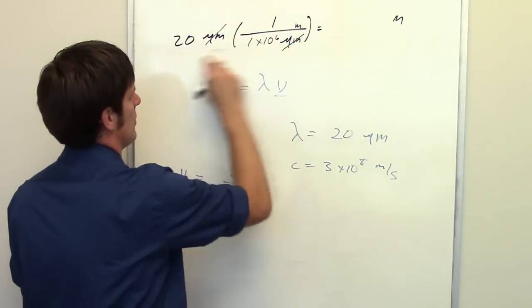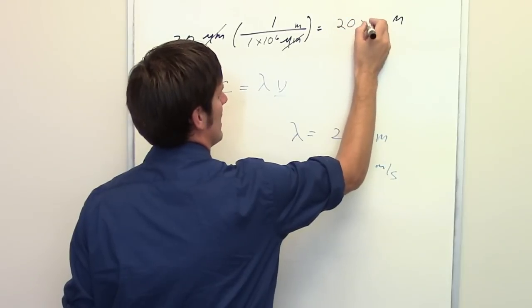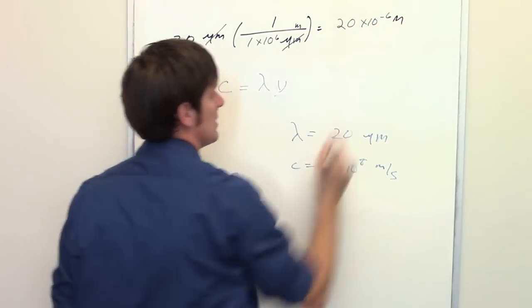The micrometer units cancel each other out. 20 divided by 1 times 10 to the sixth equals 20 times 10 to the negative sixth meters.